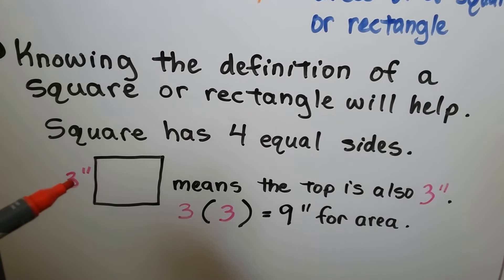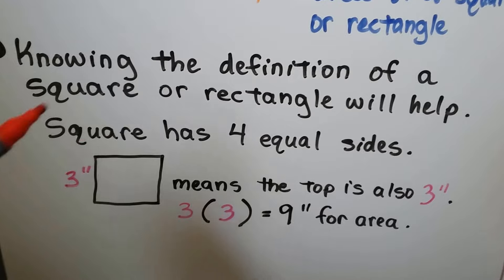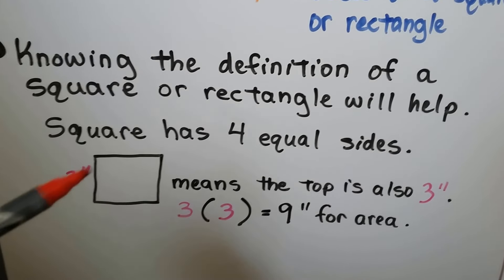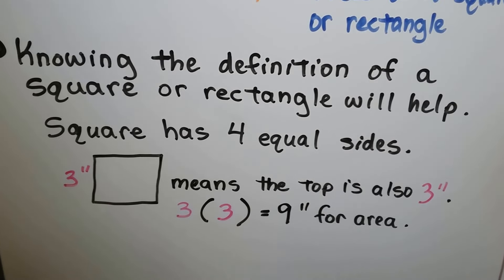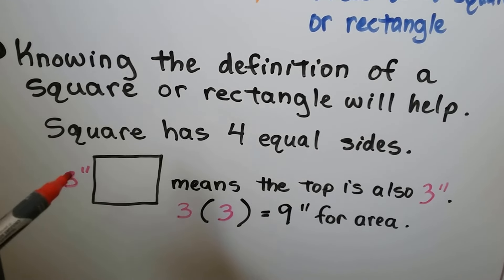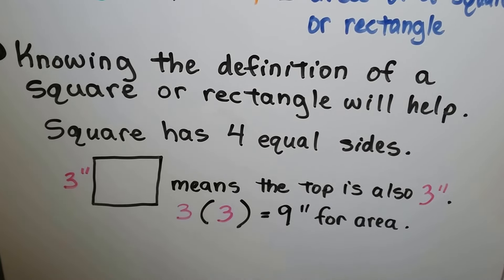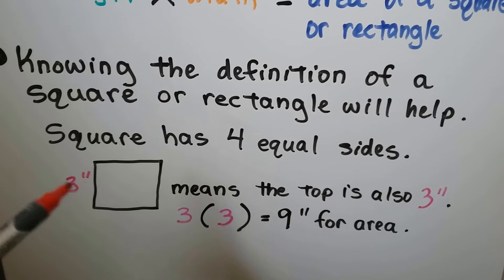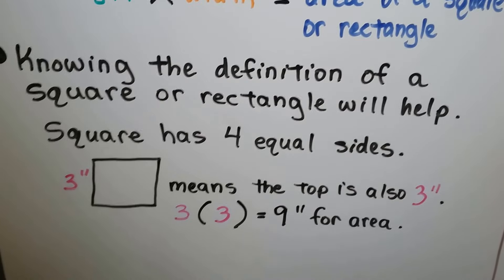If we're only given one length and it's a square, well, we know that all of them are the same, so that's got to be a 3 inch. We could do 3 times 3 and know that the area is 9. Every side is the same length, so we just need one side. We could do any measure of a square and just know what the other measure is going to be, because they're all the same.